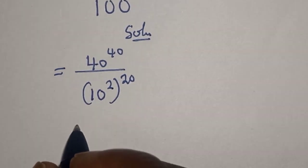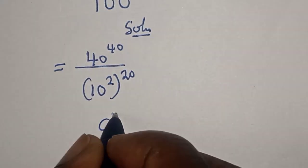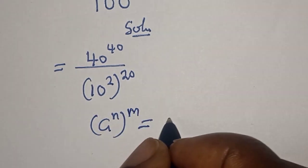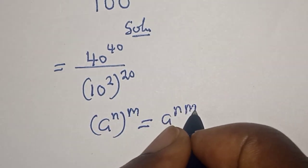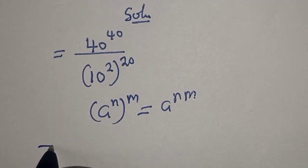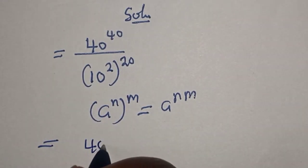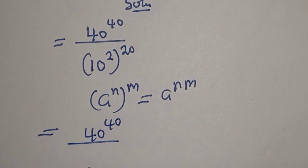Now take note of this: if you have a raised to power n to the power of m, this is equal to a raised to power n times m. Then this becomes 40 to the power of 40 divided by